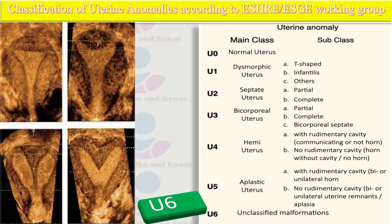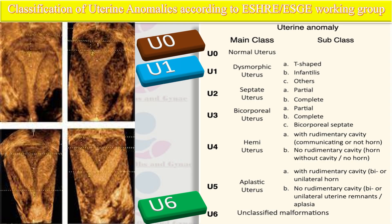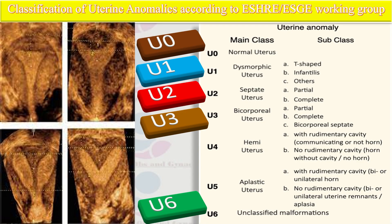Here we have the classification of uterine anomalies according to the ASRM/ESHRE working group. U0 means normal uterus. U1 is for dysmorphic uterus, mainly infantile or T-shaped. U2 means septate uterus, in which the uterine cavity is partitioned by a submuscular septum but has a normal external contour or shape. U3 means bicorporeal uterus, which includes both partial and complete types — the bicornuate and the uterus didelphys. Based on AFS classification, the uterus presents as two separate uterine horns, a double uterus with or without two separate cervixes and rarely a double vagina, with each uterine horn linked to one fallopian tube and ovary.